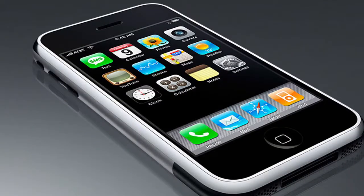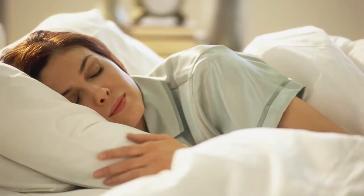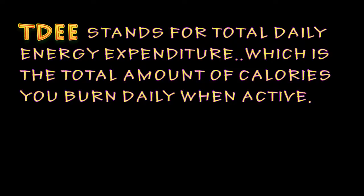Step number one is calculating your BMR. BMR stands for Basal Metabolic Rate, which is the amount of energy or calories burned daily by humans. If you laid in bed for 24 hours at rest, your BMR is how many calories your body burns. Once your BMR is figured out, we must determine what your TDEE is. TDEE stands for Total Daily Energy Expenditure, which is the total amount of calories you burn daily when active.